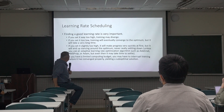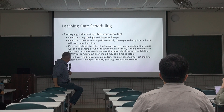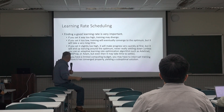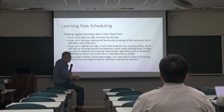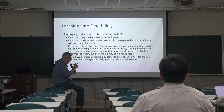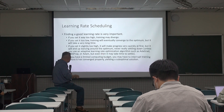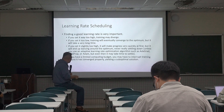The next topic is learning rate scheduling. Finding a good learning rate is important. If you set it too high, training may diverge. If too low, it takes a long time to converge. If slightly too high, you make progress quickly at first but end up dancing around the optimum. Adaptive learning rate optimizers like AdaGrad, RMSProp, and Adam adjust the learning rate during training.